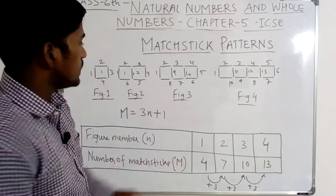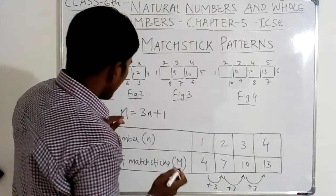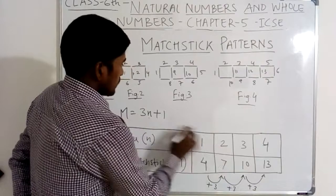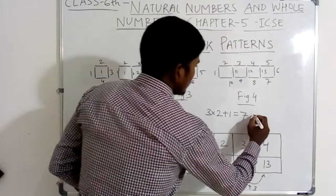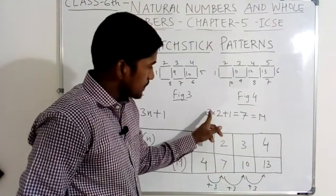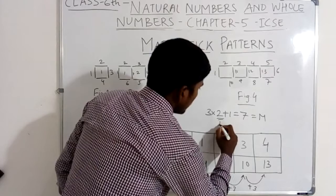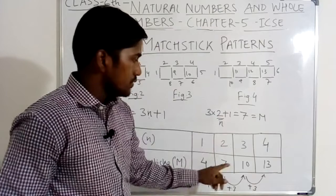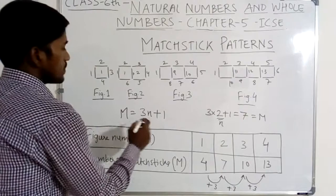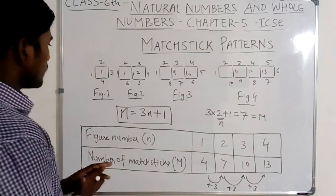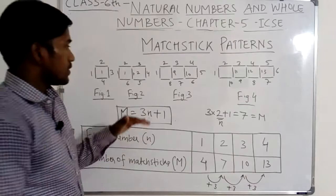Figure number one: n equals one. Three into one equals three, plus one equals four — correct. For n equals two: three into two equals six, plus one equals seven — correct. So the formula is M equals three n plus one, where M is the number of mastic and n is the figure number. This formula is only suitable for square patterns, not for triangle patterns.